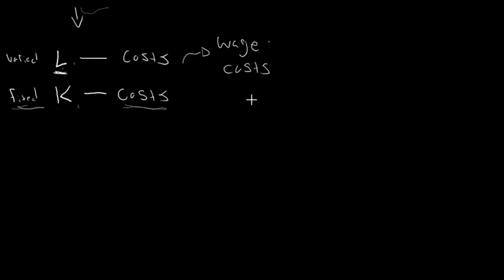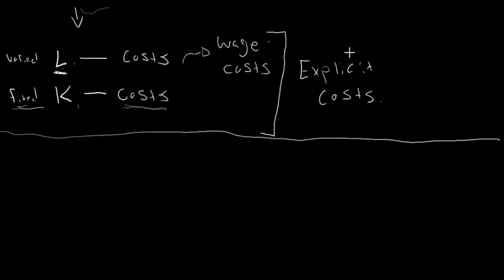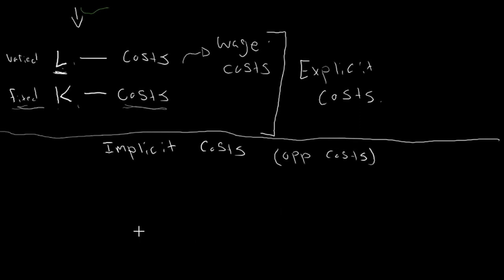We would refer to all of this as our explicit costs — the actual cost of these workers, the actual cost of this capital. These are found on balance sheets and income statements; this is what accountants figure out for us. One of the big things we're going to be looking at is a little bit different though: we're really going to be interested in what we call implicit costs — these are the opportunity costs of our choices.